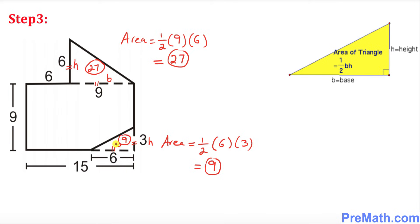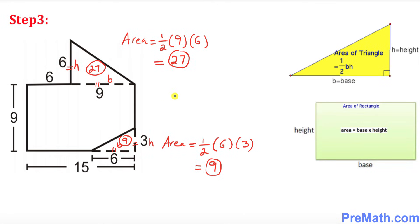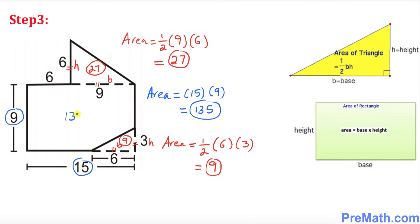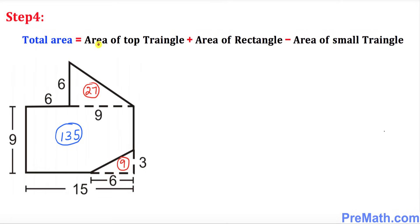Finally, we find the area of the rectangle. The formula for a rectangle is base × height. The base is 15 and the height is 9, so the area of the rectangle is 15 × 9 = 135 square units.